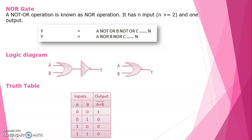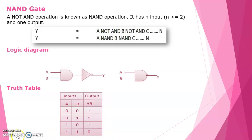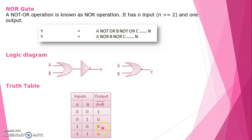Next is the NOR gate. The NOT and OR operation combined is known as the NOR operation. It has N inputs, where N ≥ 2, and 1 output. The logic diagram is an OR gate with a circle added at the output. Truth table for NOR: OR gives 0,1,1,1 — taking complement gives 1,0,0,0. Because 0+0=0 complement is 1; 0+1=1 complement is 0; 1+0=1 complement is 0; 1+1=1 complement is 0.